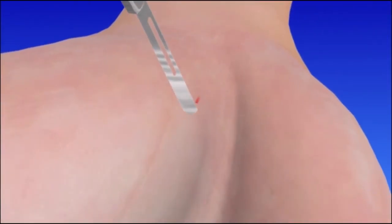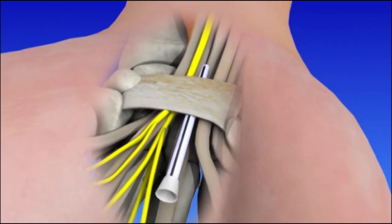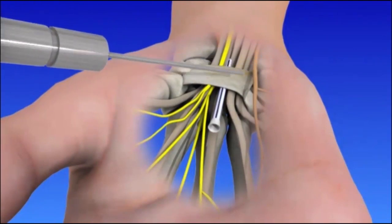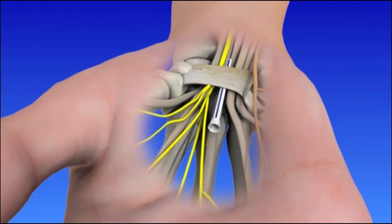To begin, an incision is made to gain entry into the carpal tunnel. A cannula, which is a tube with a slot on the side, is placed alongside the median nerve. The endoscope is placed into the cannula to look at the underside of the transverse carpal ligament, ensuring that the nerve and tendons are out of the way. A special knife is inserted through the cannula to divide the transverse carpal ligament.